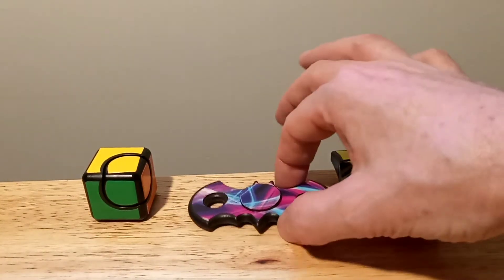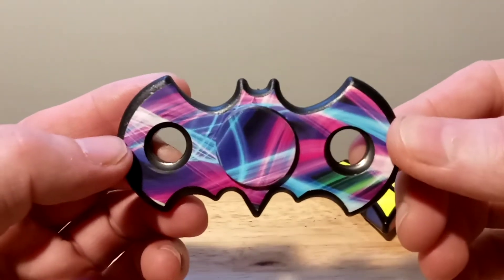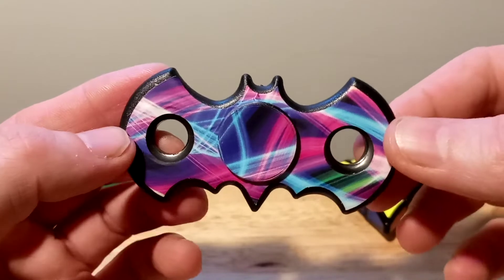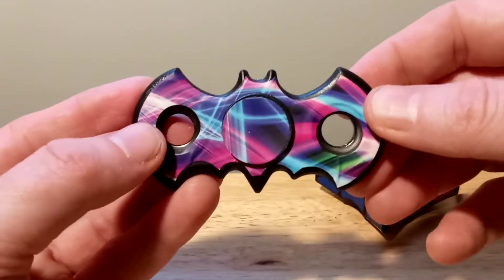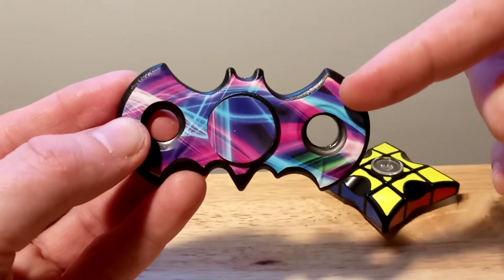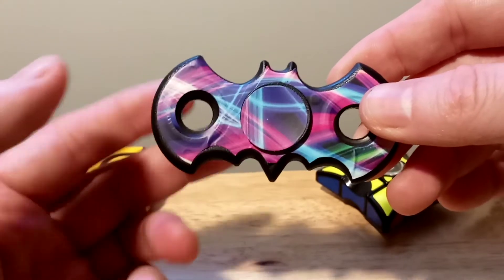And then we have, I bought this off Amazon. This is the Batman fidget spinner. I think this is the nicest looking one. Yeah, beautiful colors. It comes with the stickers separate, where you have to put the stickers on yourself.